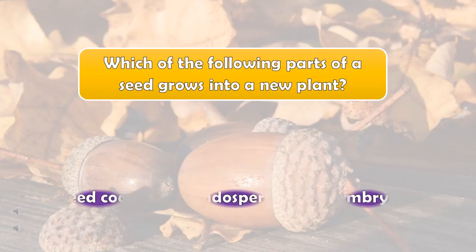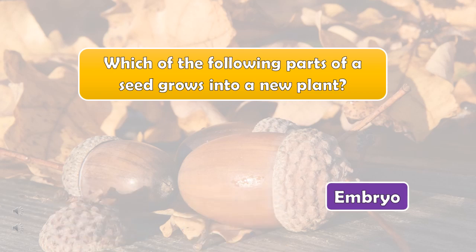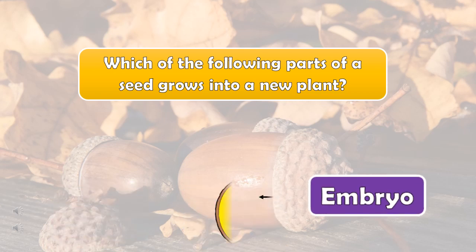Which of the following parts of a seed grows into a new plant? The right answer is embryo.